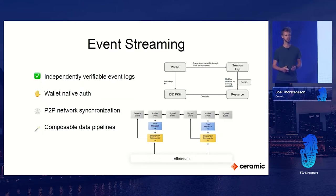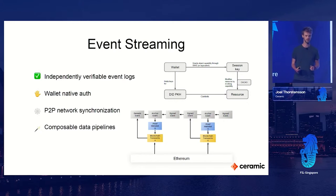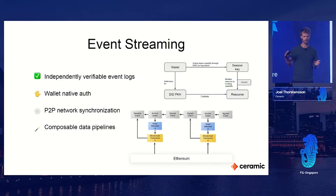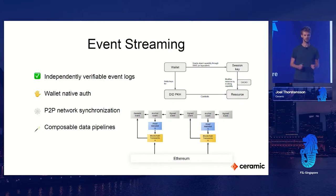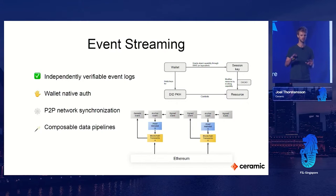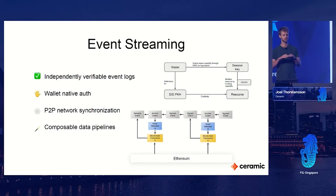All of this is based on the fundamental building block in Ceramic, which is called an event stream. An event stream is an independently verifiable event log. The core difference from a blockchain is that an event stream can be synchronized and verified without caring about any other state in the network. In a blockchain, you need to synchronize all of the history to know the state of a smart contract. In Ceramic, you can synchronize one event stream without caring about anything else in the network. This is really what enables Ceramic to scale way beyond what blockchains can currently do.